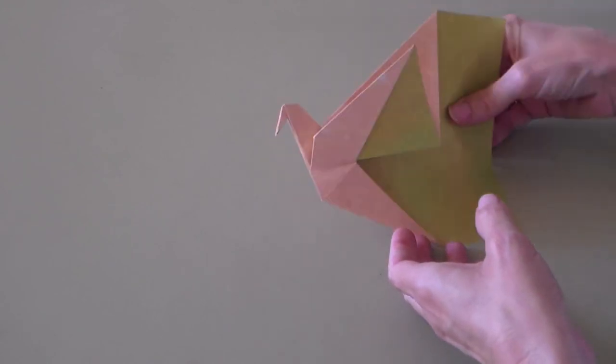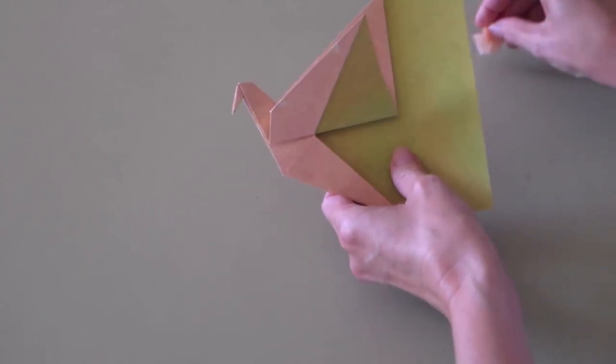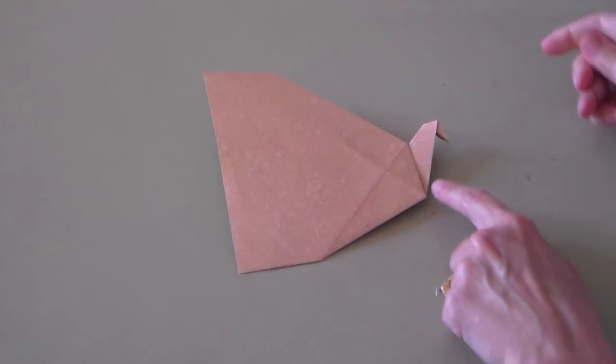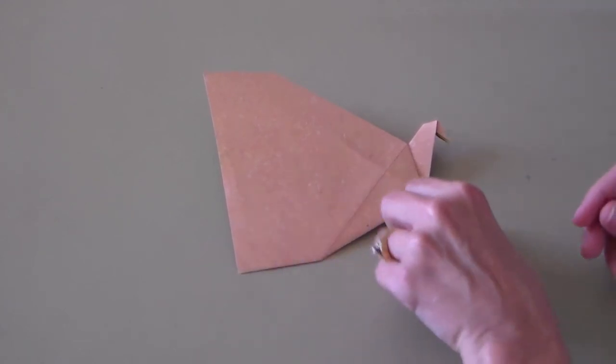So you have a lovely crane on this side of the paper. But on the other side, all you can really see is the head and then the continuation of the paper.